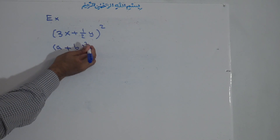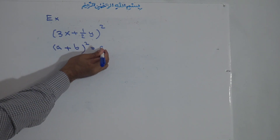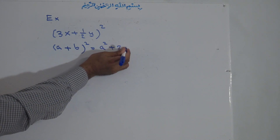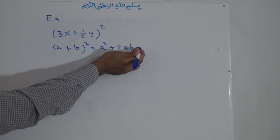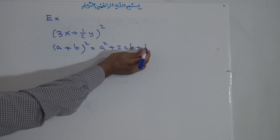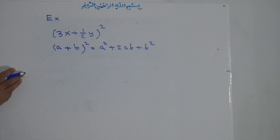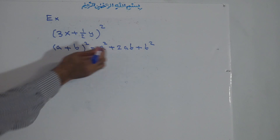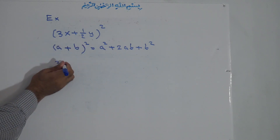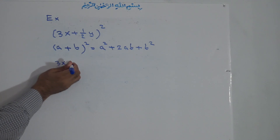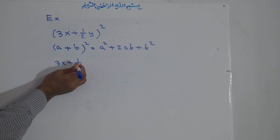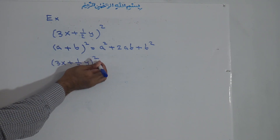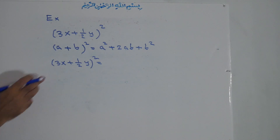The identity is: a squared plus 2ab plus b squared. Now we plug this example into the formula. So 3x plus one-half y to the power of 2 is equal to the first term to the power of 2. The first term is 3x.